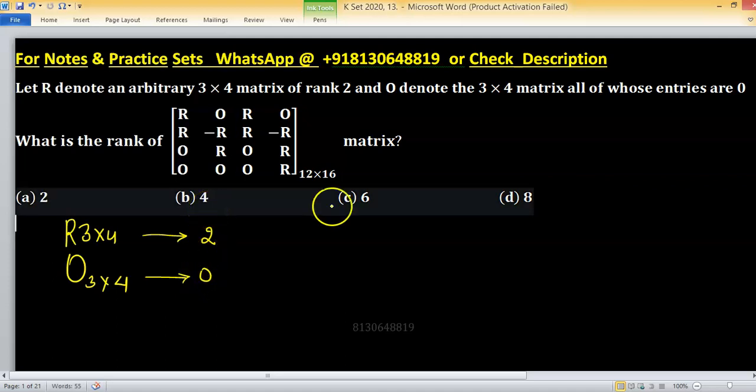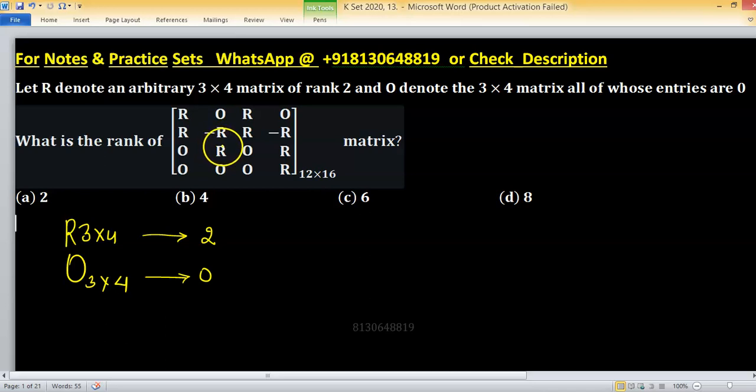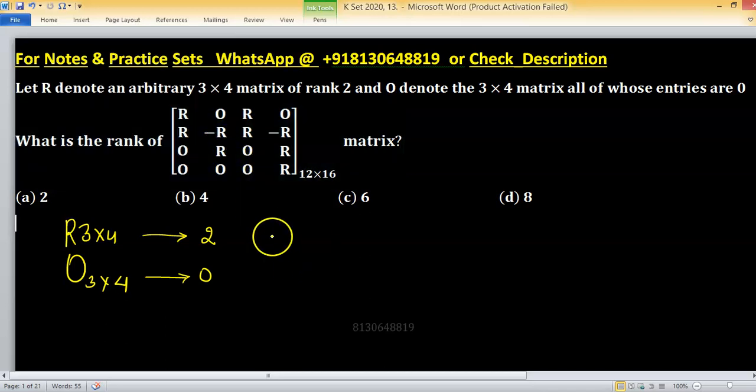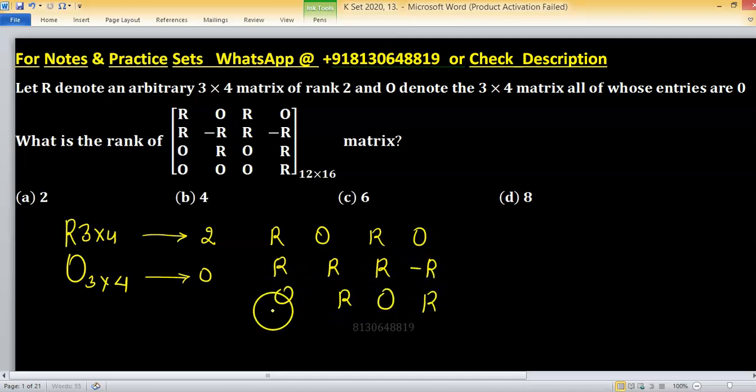Then we have to find the rank of the matrix on my screen. This matrix has entries: R, 0, R, 0; R, minus R, R, minus R; 0, R, 0, R; 0, 0, R. This is your matrix and we have to find its rank.